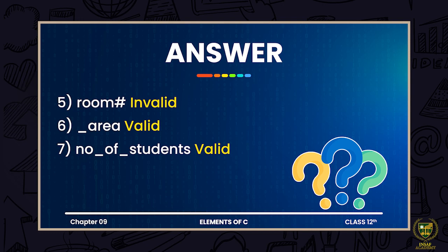Next, there is a variable named '_area' — it uses an underscore at the beginning. If we talk about '_area', it is a completely valid name for a variable because we learned that no other symbol can come at the beginning of a variable name, but an underscore can. So it is a valid variable name in C language.